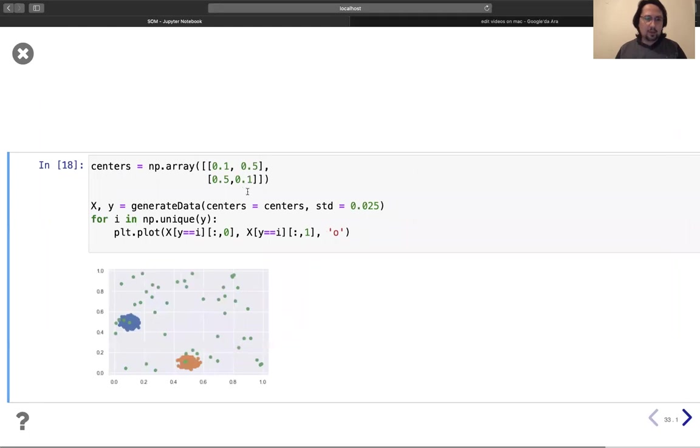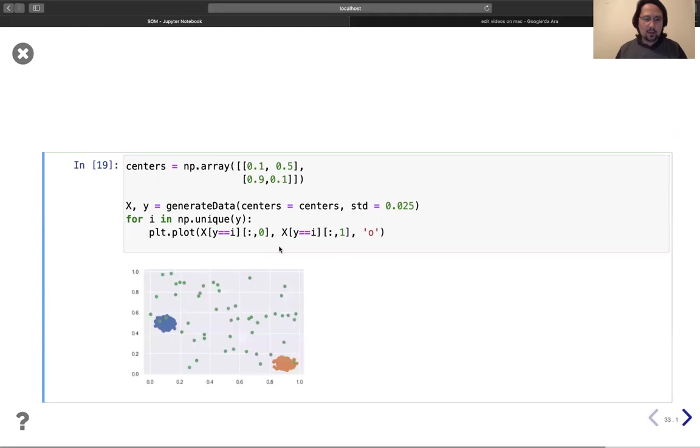Okay, this is not what I wanted, so 0.9. Okay, so 0.9 and 0.5. Let's make it like this one.